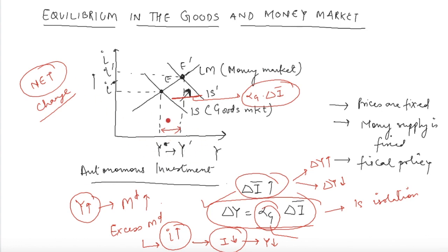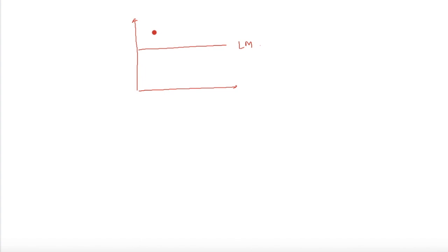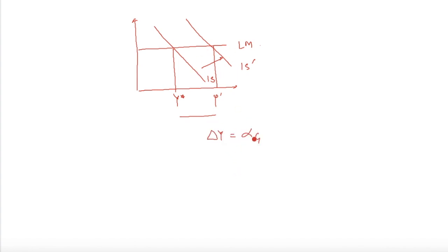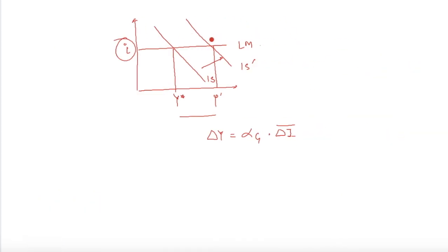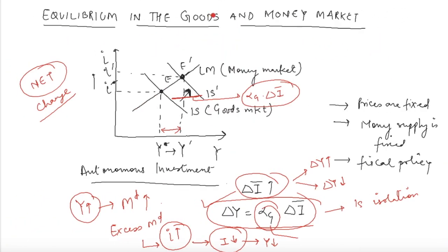And this is the reason why output is increasing by a lesser amount as compared to what the IS curve predicts. Now, if you imagine this in a framework where the LM curve is horizontal, and in this scenario the IS curve shifts, then you will notice that the change in output will actually be equal to the value predicted by the IS curve - meaning the actual change in output will be exactly equal to alpha_G × delta_I bar - because with a horizontal LM curve, there will be no change in interest rates, and if there is no change in interest rates, the decrease in investment and output that we were seeing will not occur.